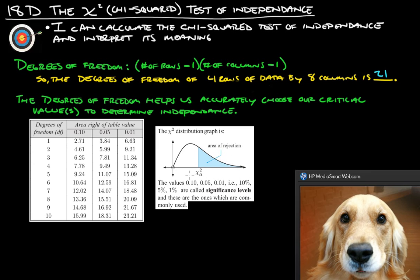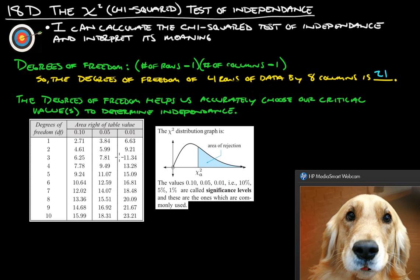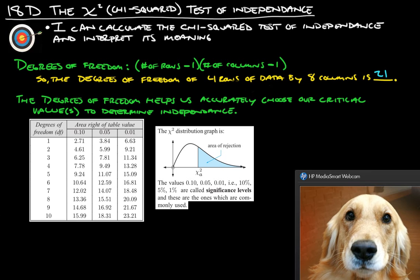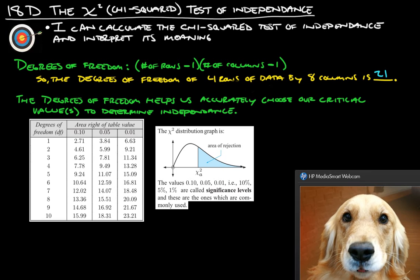This kind of explains this a little bit more. The values 0.10, 0.05, 0.01, ten, five, and one percent are called significance levels. And these are the ones which are most commonly used, and really the one that's the most commonly used is 0.05. So we'll most likely be looking in this middle column here for the most part. Again, this probably isn't making much sense yet, but we will get there.